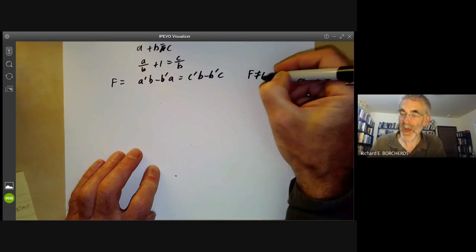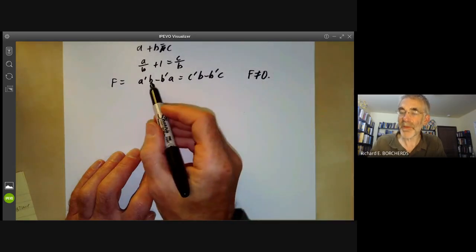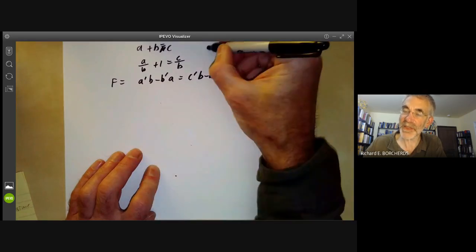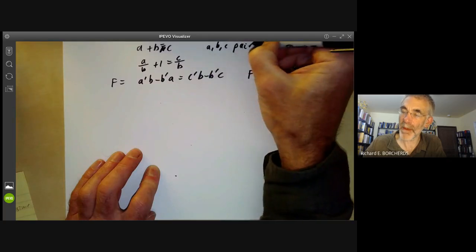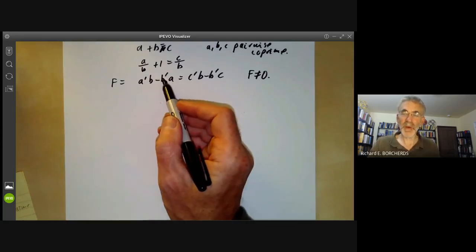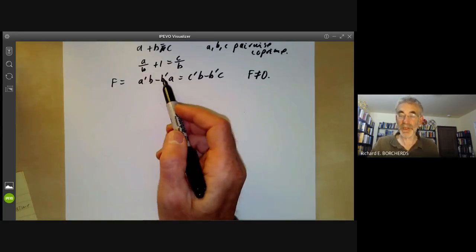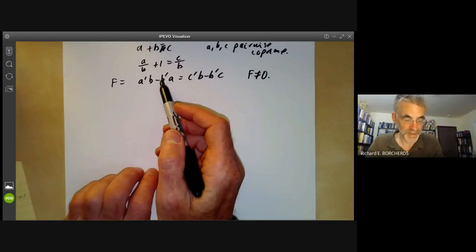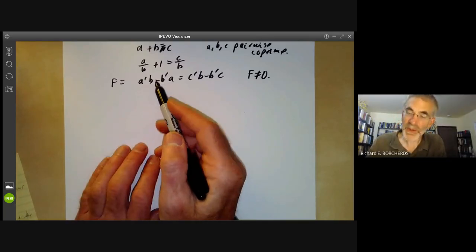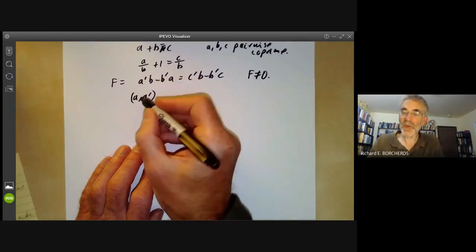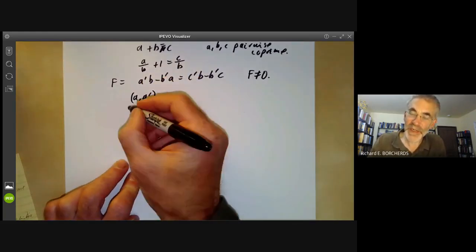then B would divide B prime times A, but B and A are co-prime by definition. So we're saying A, B, and C are pairwise co-prime. And we're working characteristic zero, so B can't divide its derivative. If you want to do this over fields of characteristic p, you need to be a little bit more careful, but we won't worry about that.